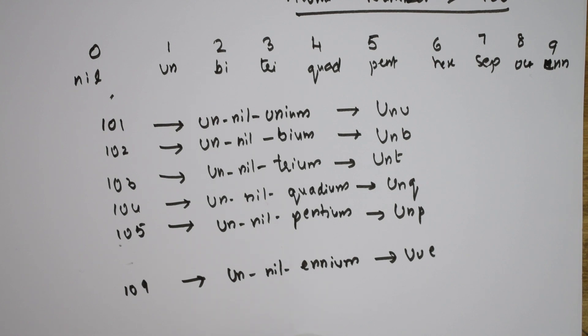Suppose if you have to write 120, how do you write? 1 stands for un, 2 stands for bi, 0 stands for nil-ium: Ubn. 130: un-tri-nilium, Utn, symbol. 140: un-quad-nilium, Uqn. 150: un-pent-nilium, symbol is Upn.